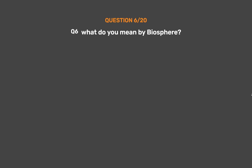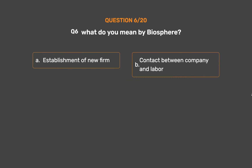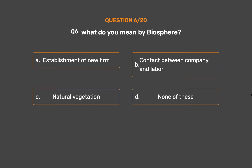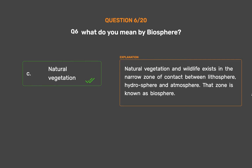Question No. 6. What do you mean by biosphere? Option A: Establishment of new firm. Option B: Contact between company and labor. Option C: Natural vegetation. Option D: None of these. The correct answer is Option C: Natural vegetation. Natural vegetation and wildlife exist in the narrow zone of contact between lithosphere, hydrosphere and atmosphere. That zone is known as biosphere.